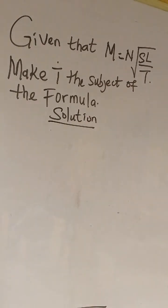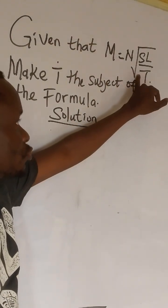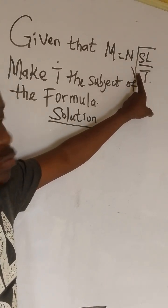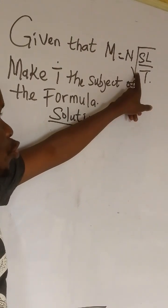Now in this question, what can we do first? When you have a question like this that contains roots, the first thing we have to do is to remove our root. And how can we do that? We square both sides.